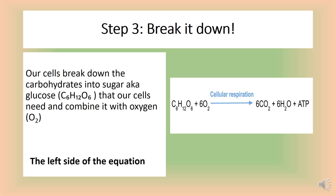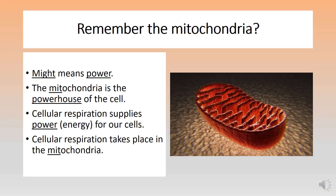Now it's trivia time. Which part of a cell does cellular respiration occur? Here's your hint: power. Cellular respiration supplies energy and power to a cell. Remember the lesson on cell parts? The mitochondria has returned. Might means power — the mitochondria is the powerhouse of the cell. Cellular respiration takes place in the mitochondria.